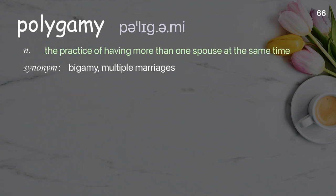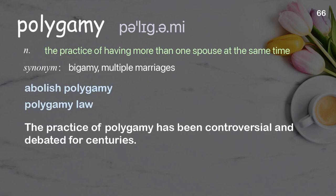Polygamy: the practice of having more than one spouse at the same time. Examples: abolish polygamy, polygamy law. The practice of polygamy has been controversial and debated for centuries.